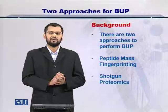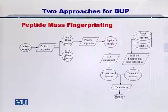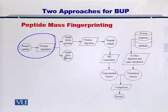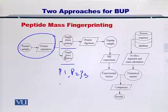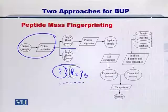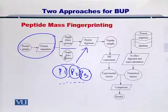Let's take a look at them in detail. As you can see in this figure from your textbook, the proteins that you have in the sample need to be separated. So if you have protein 1, protein 2, protein 3, and so on and so forth, then you need to separate them first before taking them to the enzymatic digestion step.